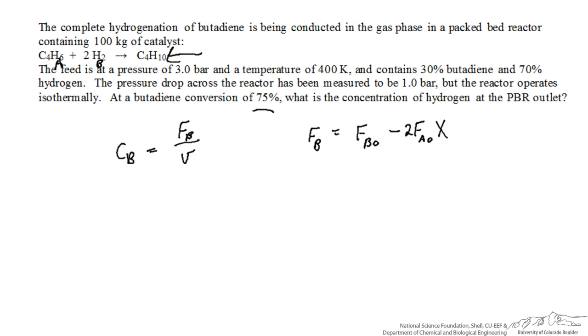In terms of the volumetric flow rate, we're going to relate that to the inlet volumetric flow rate for the reactor. That will be equal to, assuming ideal gas behavior, the total flow rate over the inlet total flow rate times the inlet pressure over the outlet pressure. This is a proportionality that comes straight from the ideal gas law.